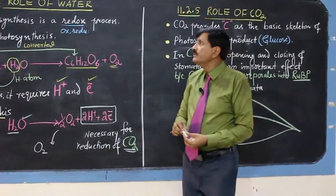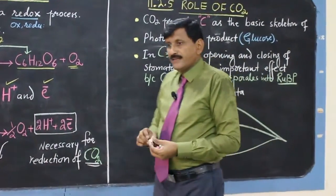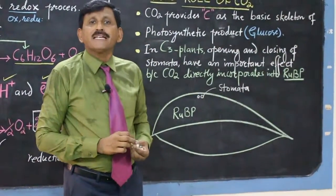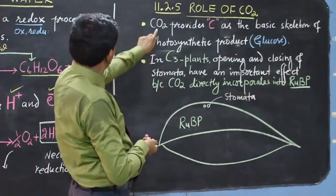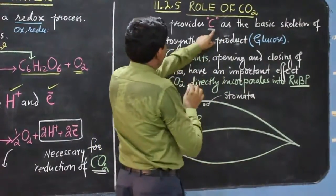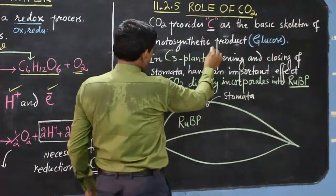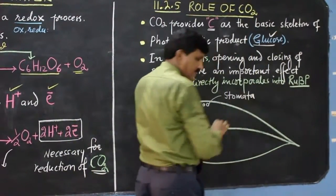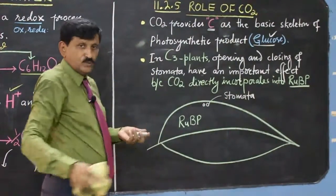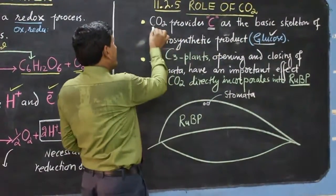The role of carbon dioxide in photosynthesis: carbon is the key element in organic compounds. Carbon dioxide provides the carbon as the basic skeleton to the photosynthetic product, which is glucose. So the basic carbon skeleton of glucose is provided by carbon dioxide.